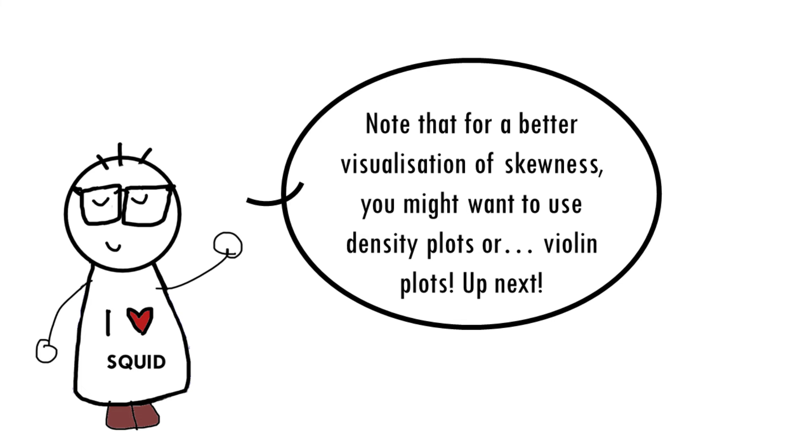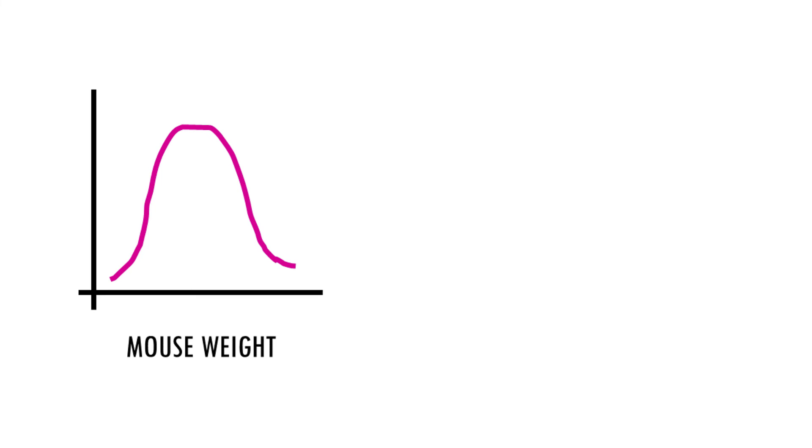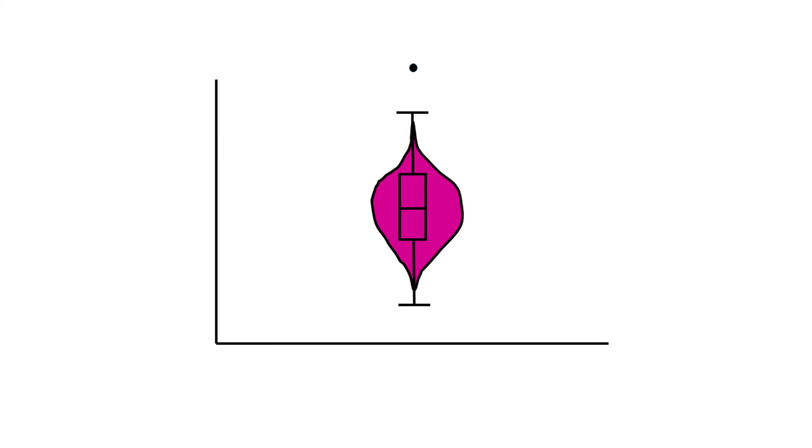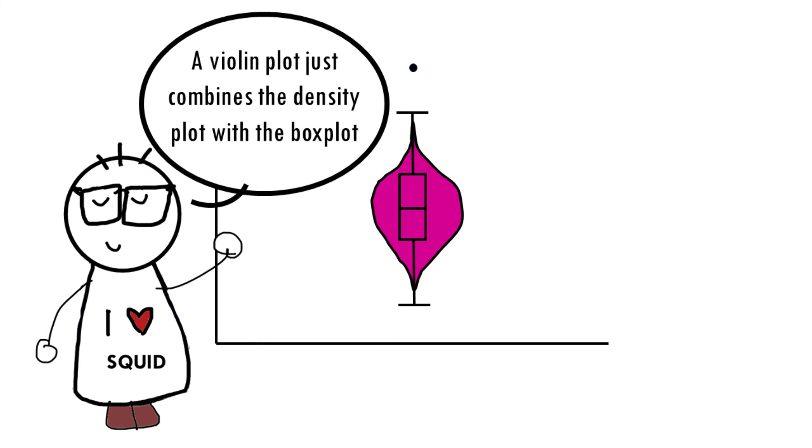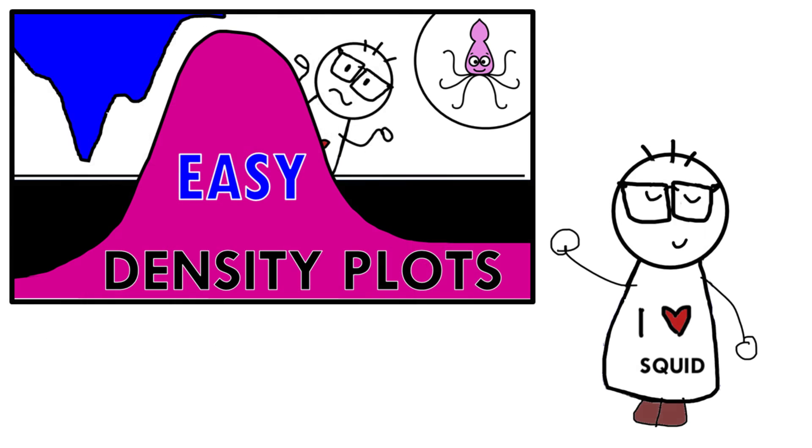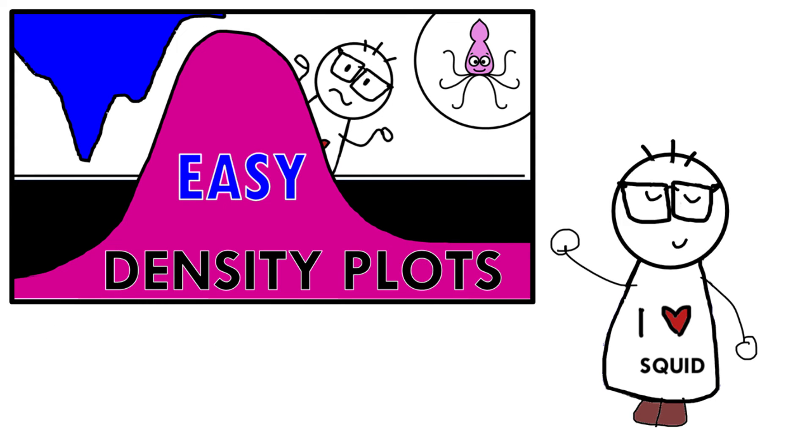So we've seen how to visualize the distribution of our data with density plots and with box plots. What if we could combine both? This will give us a violin plot. We have our box plot, but then we add a rotated density plot on each side. If you haven't yet, check out my video on how to interpret density plots to get the main concepts when understanding these plots.